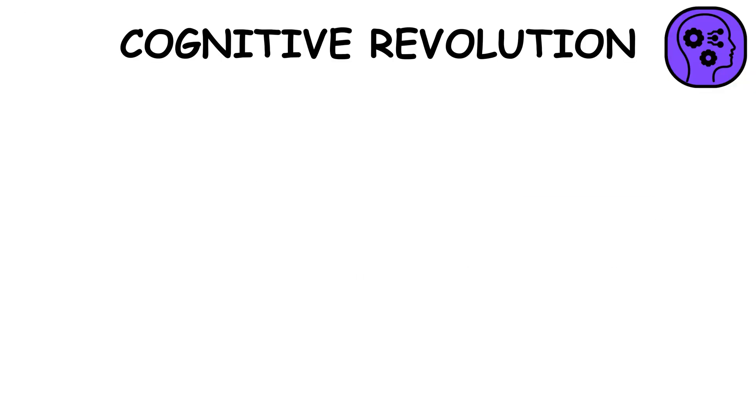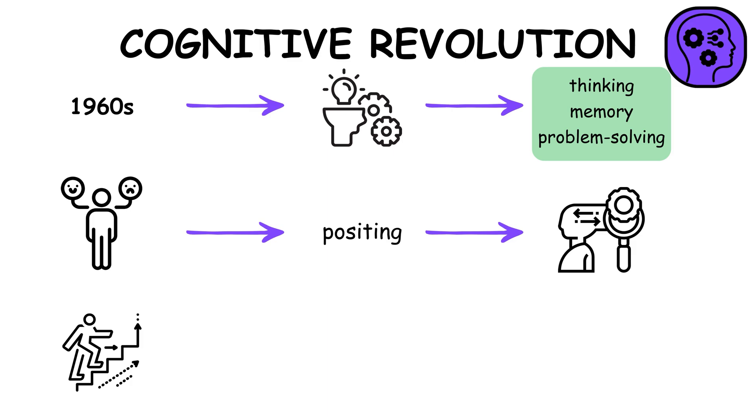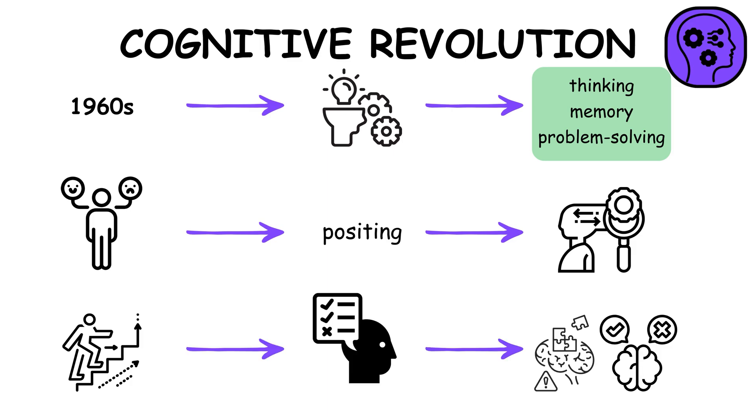The cognitive revolution in the 1960s shifted focus to internal mental processes like thinking, memory, and problem solving. It challenges behaviorism, positing that mental processes influence behavior, leading to advances in understanding learning, memory, and decision making.